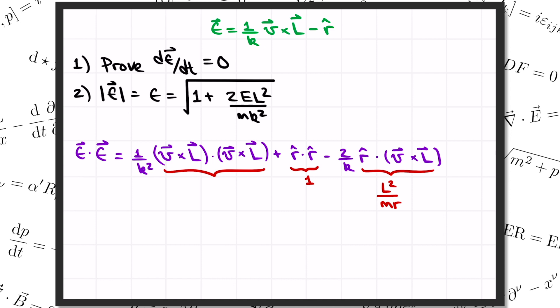The identity says that a cross b dotted into itself equals a squared b squared minus a dot b squared, where a and b here are any vectors. So when we plug in v and l, we get v cross l squared equals v squared l squared. There's no second term here because v dot l is equal to 0, since v was in the xy plane, and l is pointing in the perpendicular z direction.